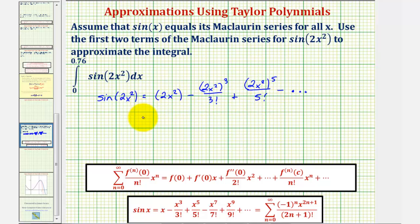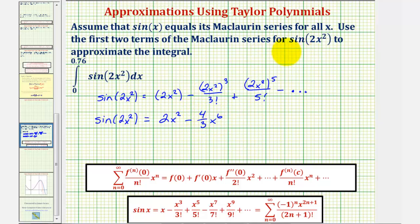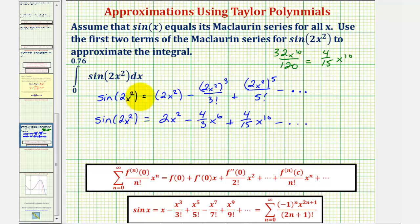Let's go ahead and simplify these terms. We'd have two x squared minus — here two x squared to the third would be eight x to the sixth divided by three factorial, which is six — so that simplifies to four thirds x to the sixth, giving us minus four thirds x to the sixth. The next term: two x squared to the fifth would be 32 x to the tenth divided by five factorial, which is 120, simplifying to four fifteenths x to the tenth. The Maclaurin series continues indefinitely, but because we're using only the first two terms to approximate this integral, the degree six Maclaurin polynomial is equal to two x squared minus four thirds x to the sixth.